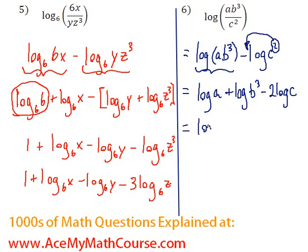So log a. And I can bring this exponent down as well, and we're done. So 3 log b minus 2 log c. And that's it.